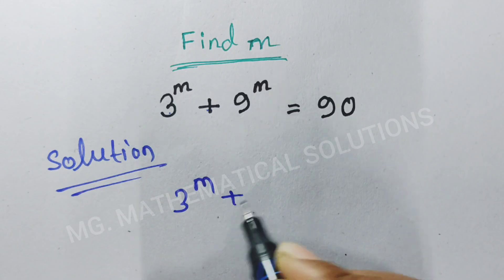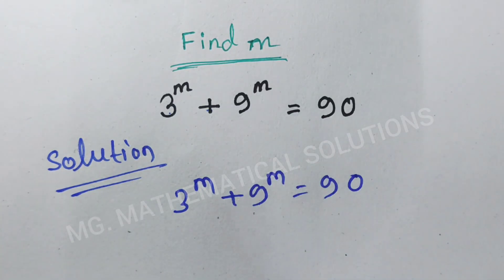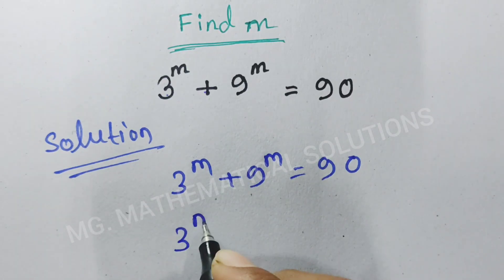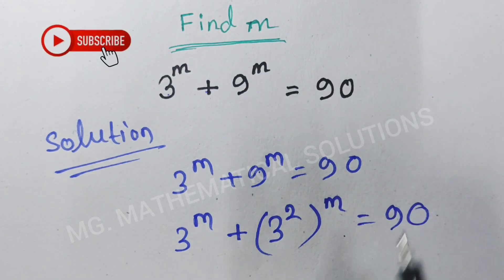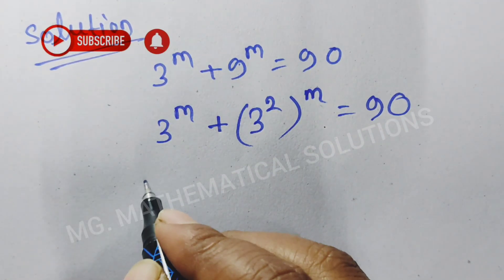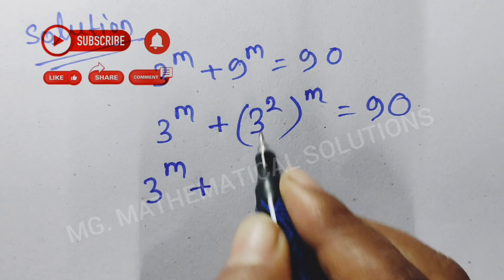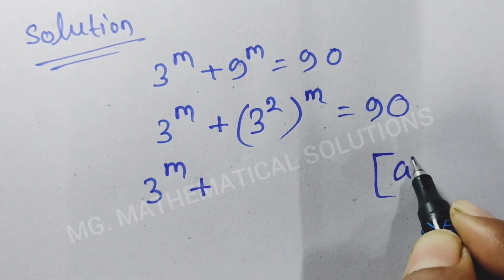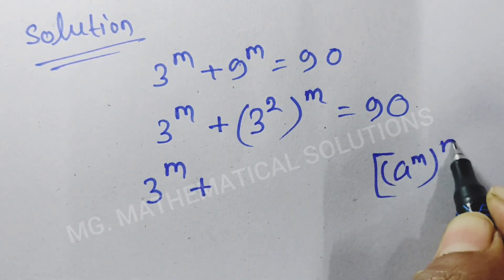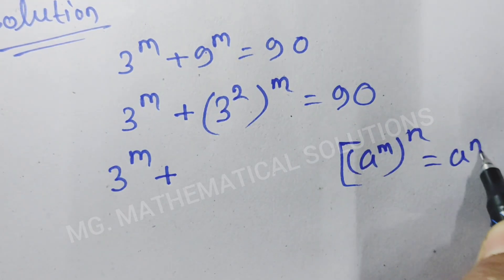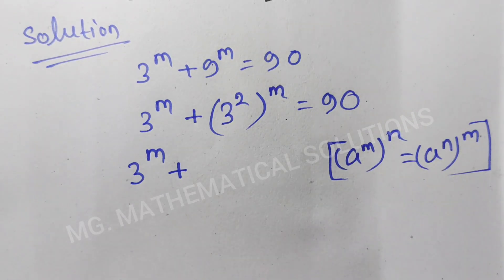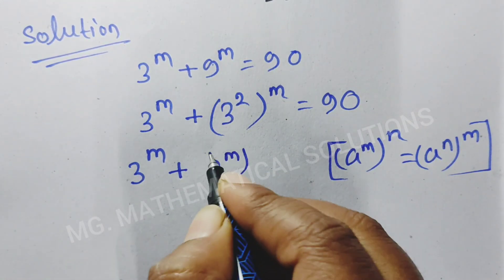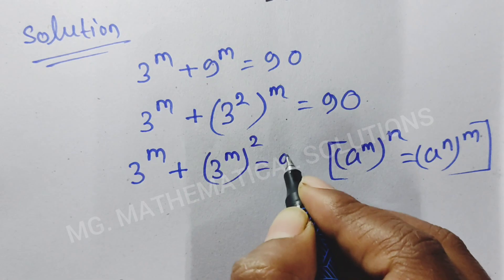3 to the power m plus 9 to the power m equal to 90. So, 3 to the power m plus 9 we can write as 3 square whole to the power m equal to 90. We use the formula a to the power m whole to the power n equal to a to the power m times n. So, 3 to the power m plus 3 to the power 2m equal to 90.